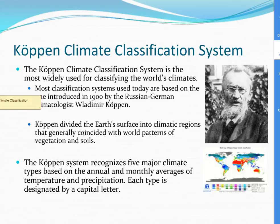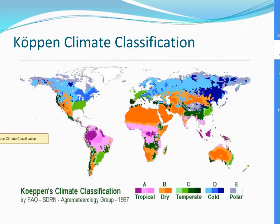The Köppen climate classification system is the most widely used for classifying world climates. Most classification systems used today are based on one created in 1900 by the Russian-German climatologist Vladimir Köppen. Köppen divided the Earth's surface into climatic regions that generally coincided with the world's patterns of vegetation and soil. The Köppen system recognizes five major climate types based on the annual and monthly averages of temperature and precipitation, each designated by a capital letter.